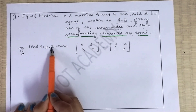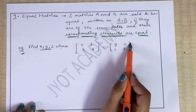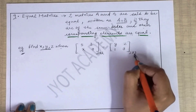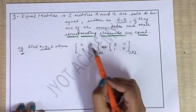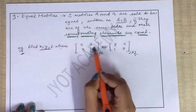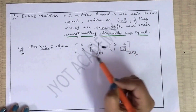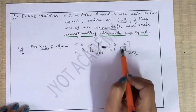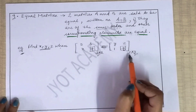For example, suppose aapko bola gaya hai x, y, z find karne hain. Yeh jo order hai is matrix ka 2×2 hai, aur is matrix ka order bhi 2×2 hai aur yahaan equal ka sign diya hua hai. Matlab — agar koi bhi two matrices equal hoti hain toh unka order equal toh hai hi, saath mein unke corresponding elements bhi match karayenge. Yahaan seven hai, toh isi position pe doosra matrix ki value bhi seven hai.